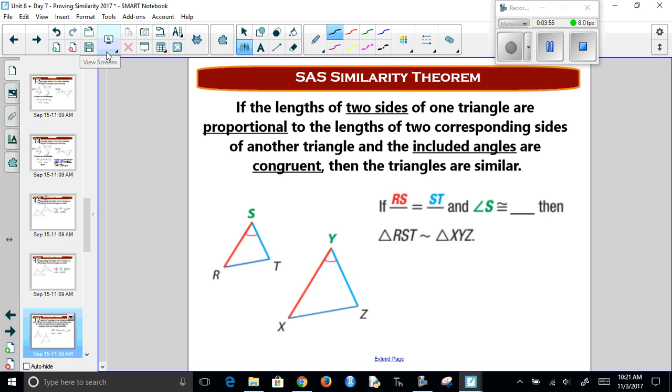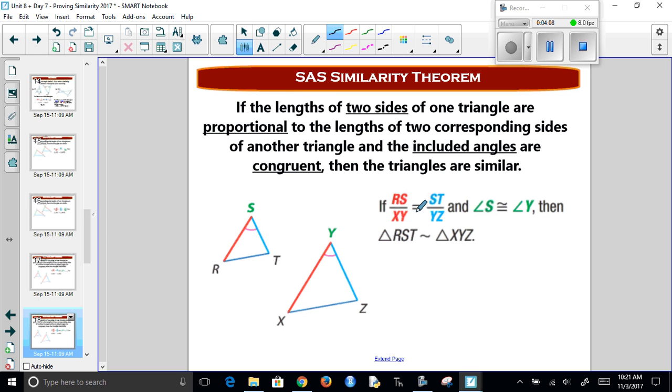And finally, if we have two, the lengths of two sides are proportional, and the included angles are congruent, then they're similar. We call this SAS conjecture. So if RS over XY is the same as ST over YZ, and the angle in between is congruent, then we know that these triangles are going to be similar.